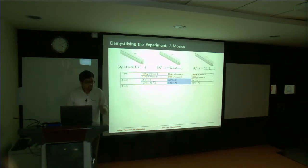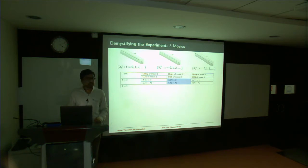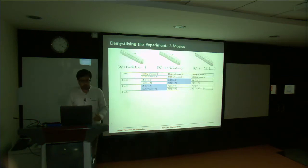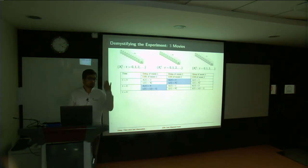Now at time t equal to 3, let's say you chose movie 2. How does this update? The number of time instants back that you observed movie 1 is now 4 — you observed it only at time 0, and now you are at time t equal to 4. D2: you just observed it the previous time instant, so its delay is 1.